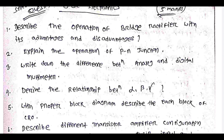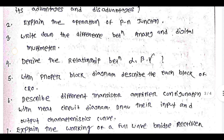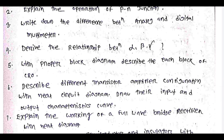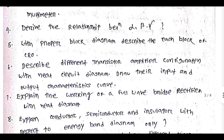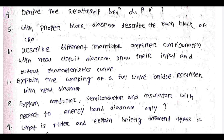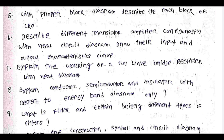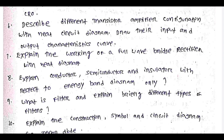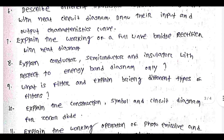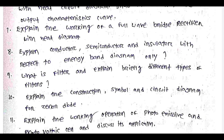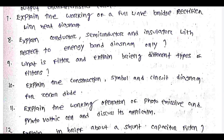Long-answer electronics questions include: Describe the operation of a bridge rectifier with its advantages and disadvantages. Explain the operation of a PN junction. Write down the difference between analog and digital multimeter. Derive the relation between alpha, beta, and gamma. With a proper block diagram, describe each block of a CRO. Describe different transistor amplifier configurations with neat circuit diagrams and draw their input and output characteristic curves.